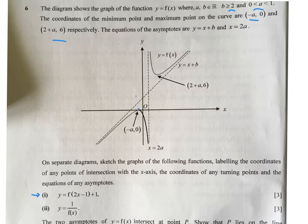This question generally had about half the cohort able to get 3 marks. Most of you got about 2 because you either got the asymptotes wrong, the intercepts wrong, or the shape of the graph wrong.